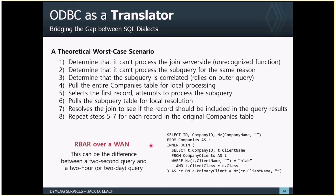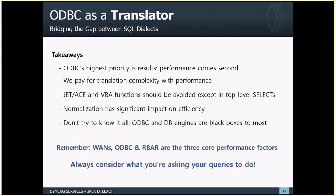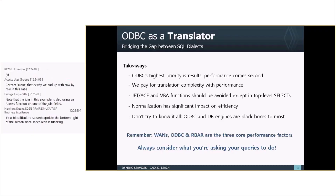The key takeaways from ODBC: it will get us results eventually — its first priority is correctness, not performance. We pay for translation complexity with performance. The more trouble ODBC has translating, the worse performance will be. Importantly, a complex query doesn't necessarily mean it's difficult for ODBC to translate — it's not about query complexity in itself but about whether ODBC can produce a clean translation. We need to think about what ODBC is actually being asked to do.